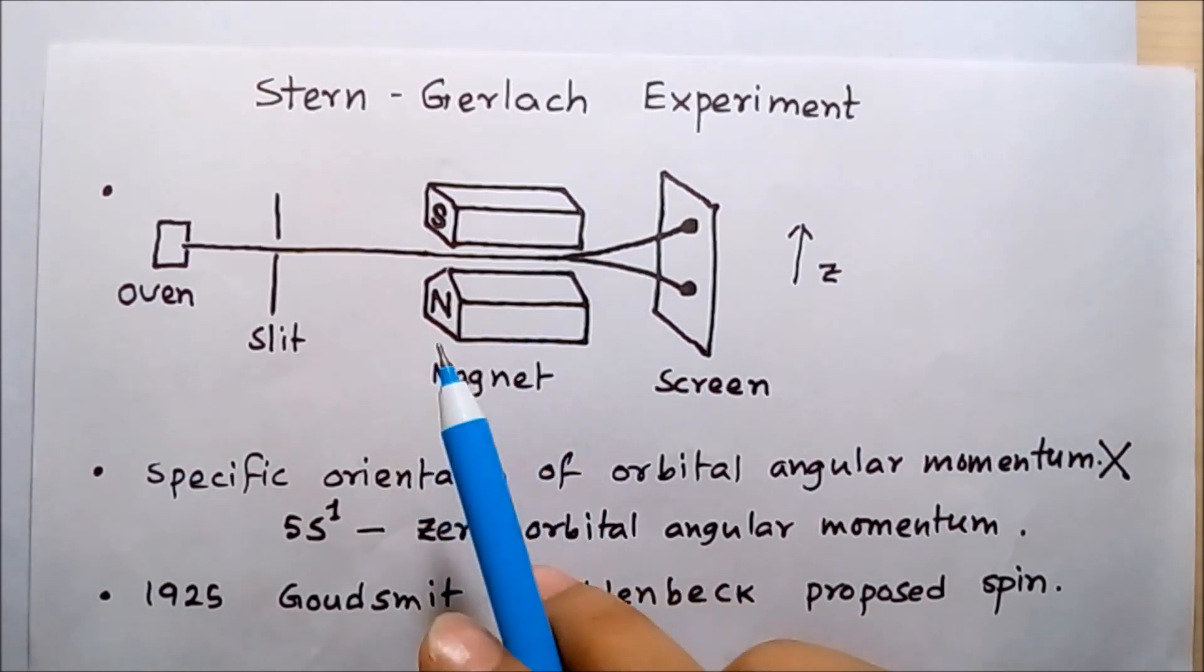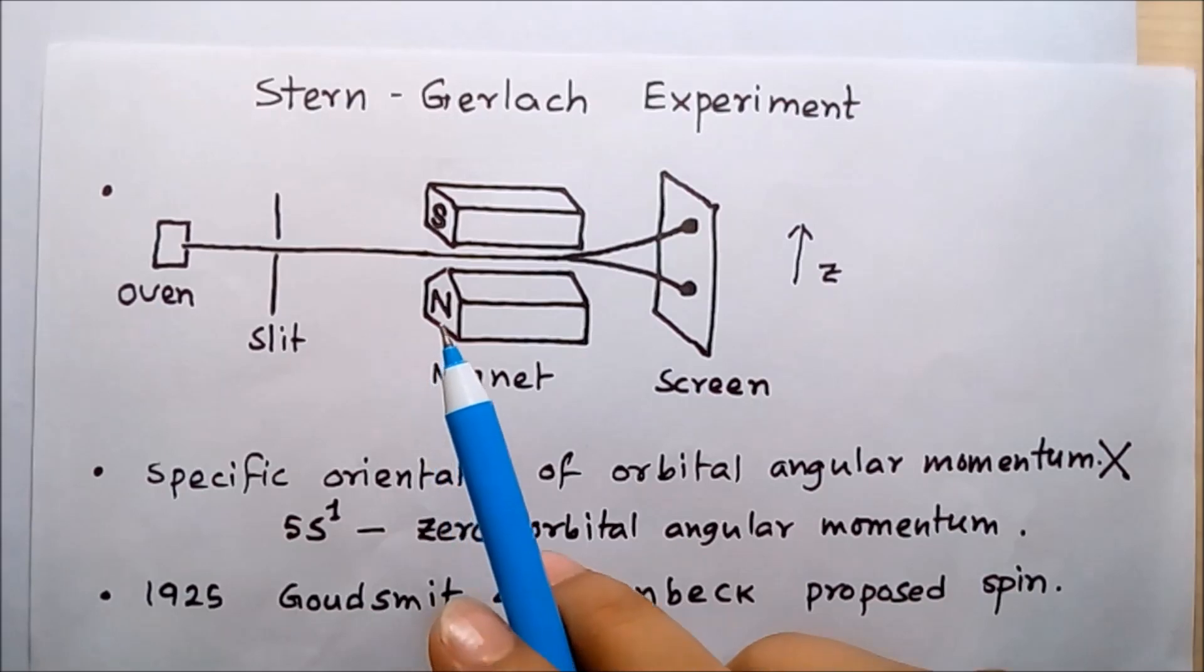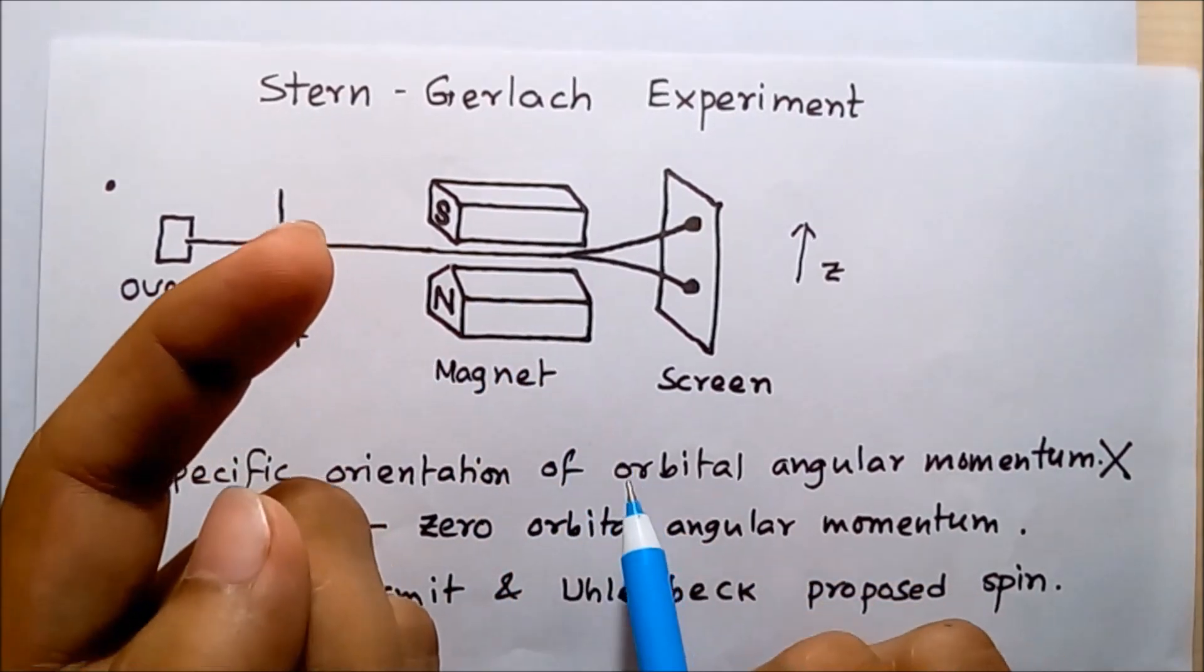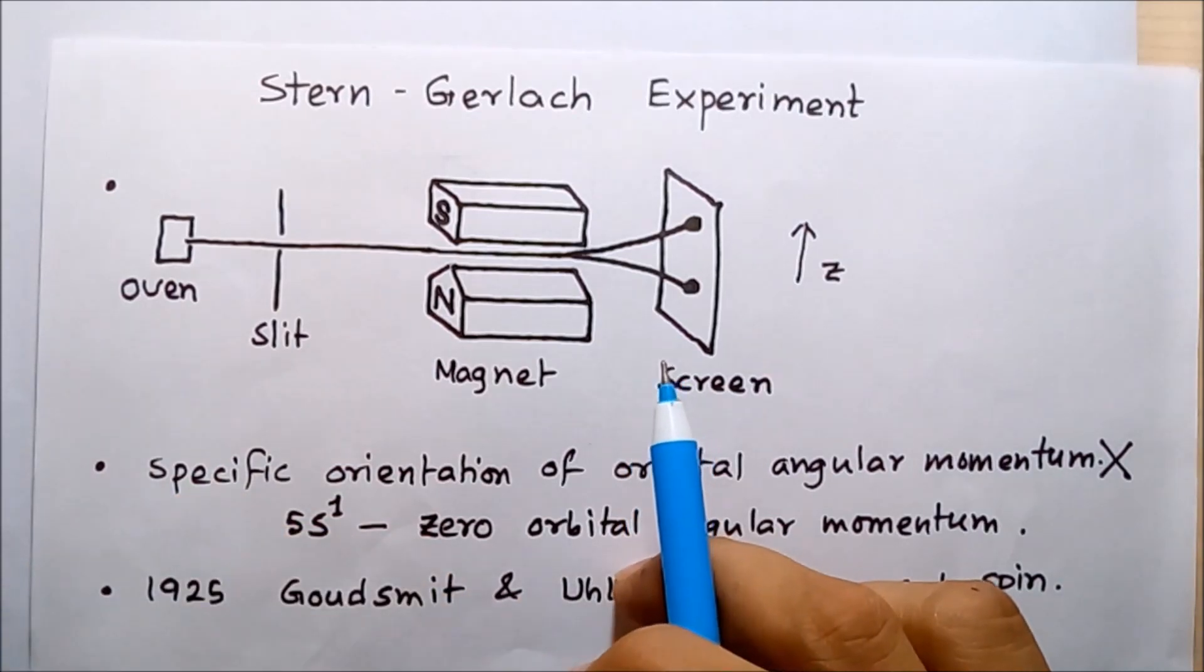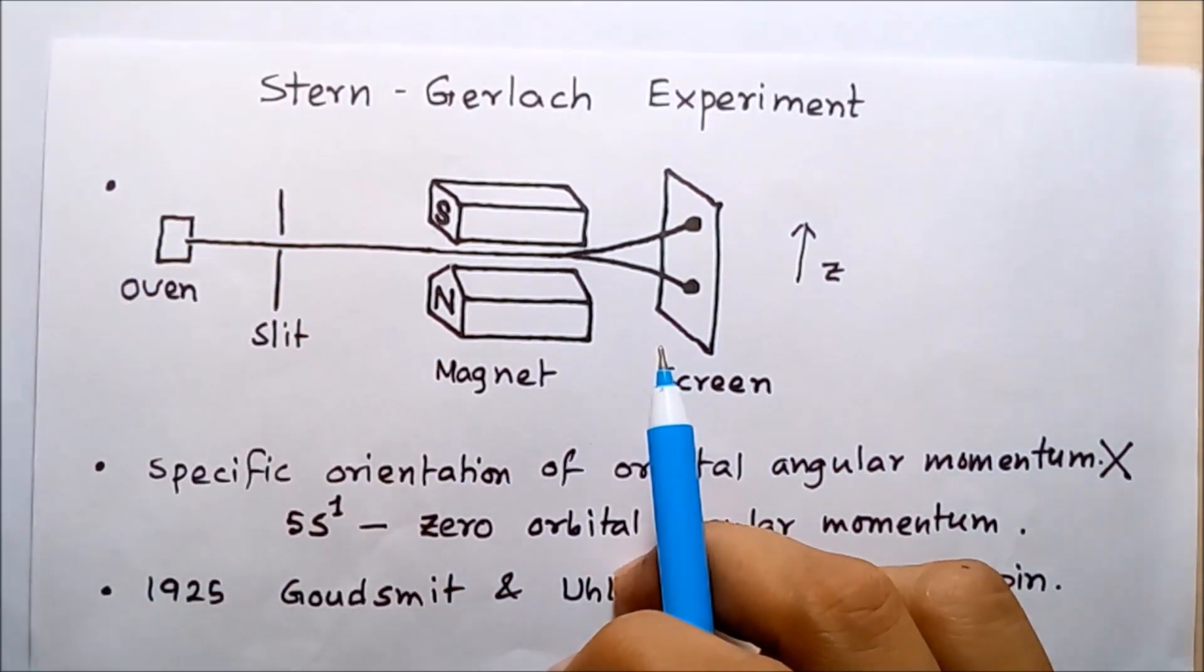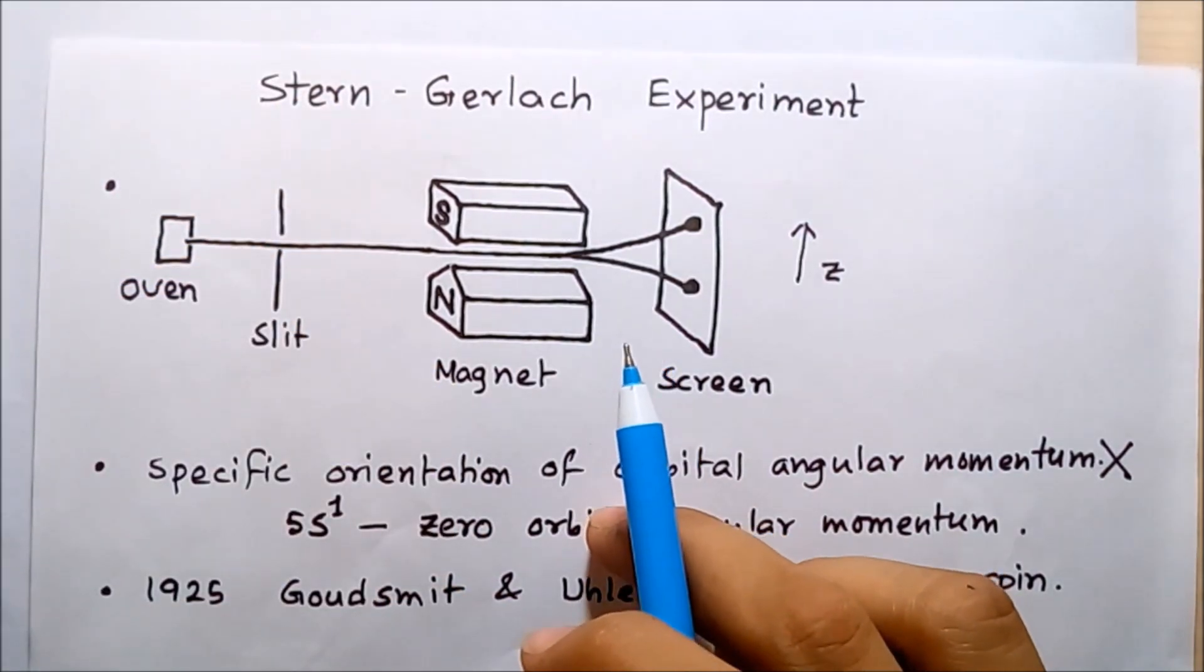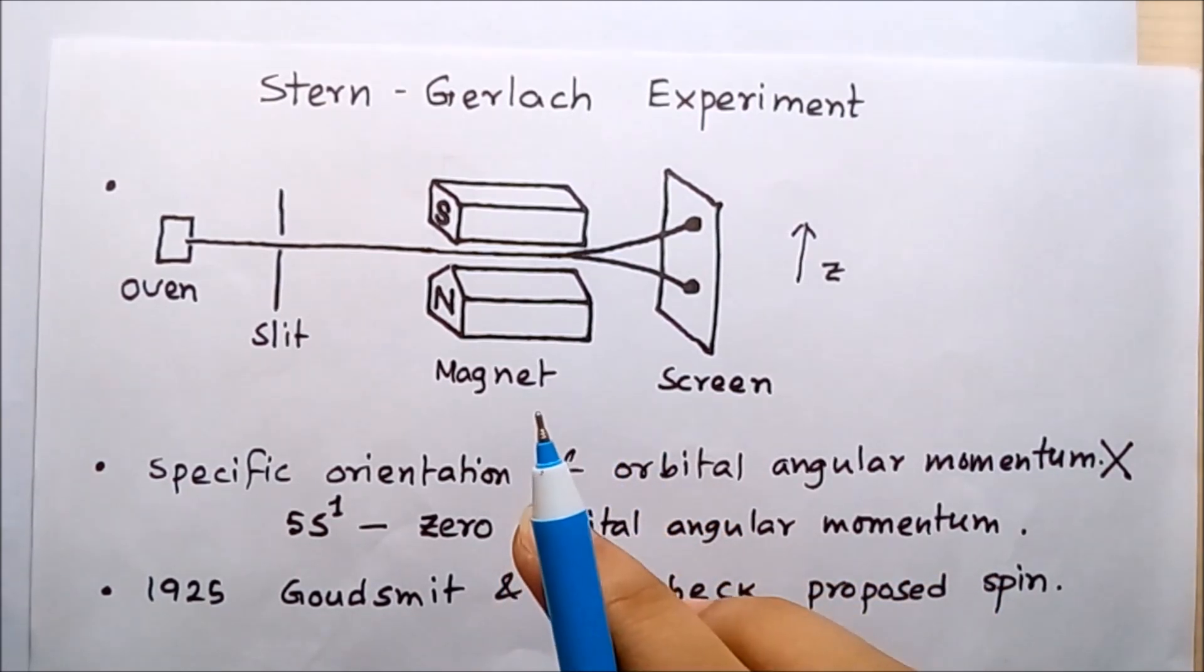This experiment also provides concrete evidence of space quantization. A classical spinning object can orient itself in any direction, but in case of the electron spin, it can have only two directions, either up or down. So there is a preferred orientation along space, and this is called space quantization.